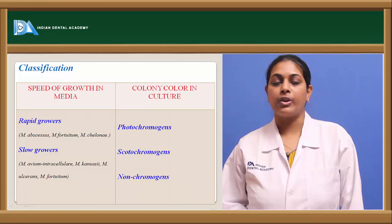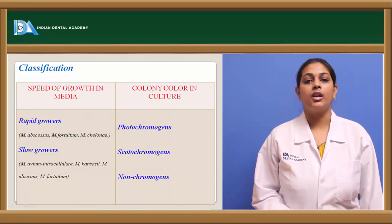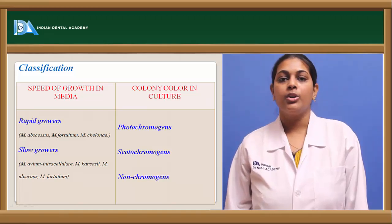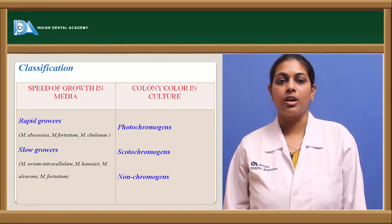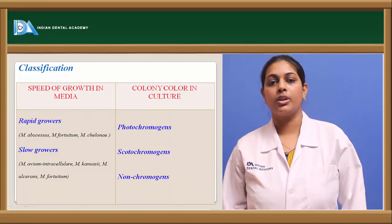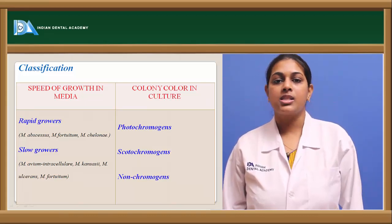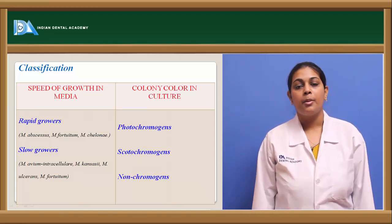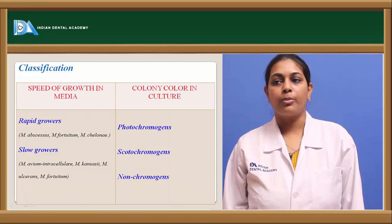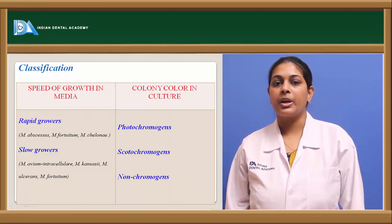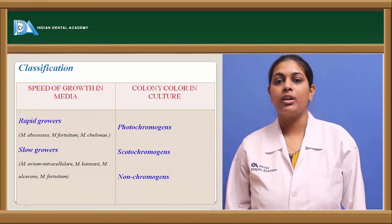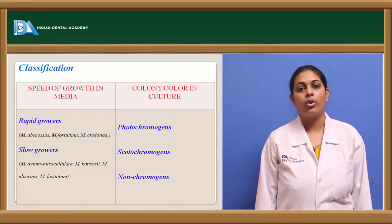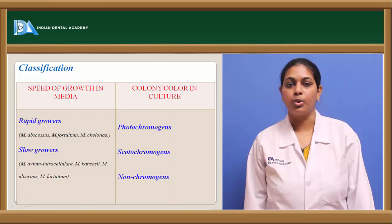Rapid growers are atypical mycobacterium species which grow within seven days. Examples include Mycobacterium abscessus, Mycobacterium fortuitum, and Mycobacterium chelonae. These are species which show rapid growth when cultured in proper media.